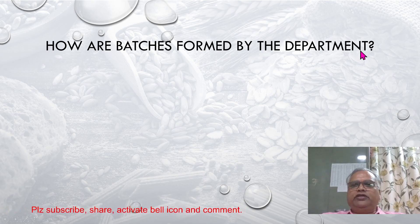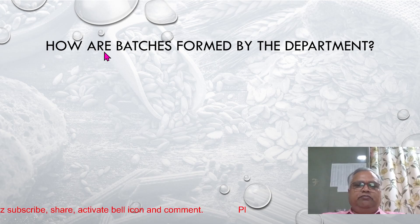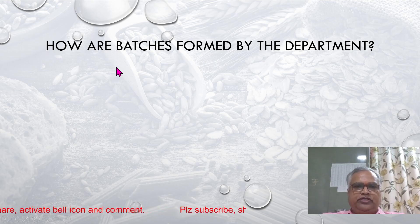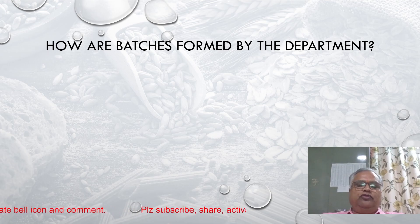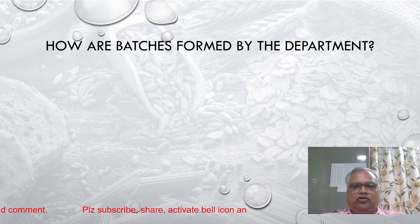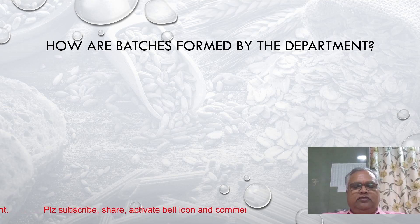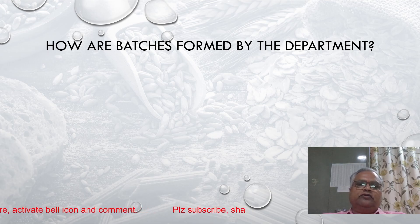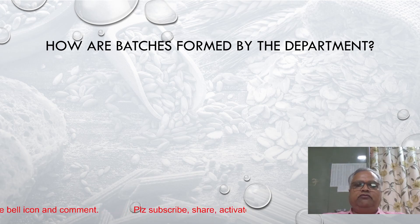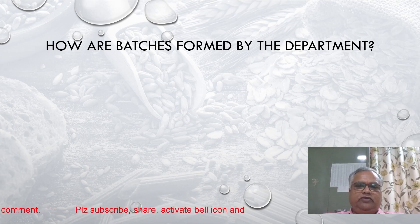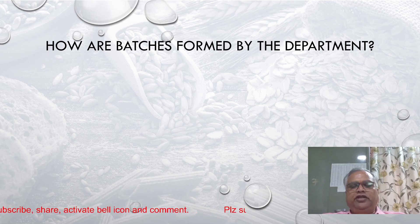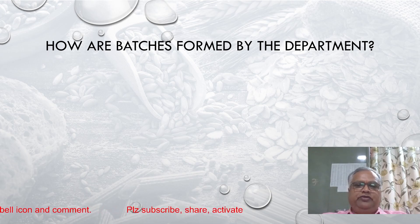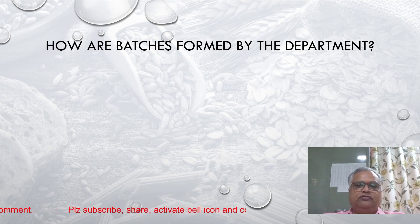How are batches formed by the department? A batch will contain a group of 3 to 4 students. Out of 4, there will be a class topper, an average student, and 2 below-average students — so the group contains all types. All toppers cannot be in one group and all weak candidates cannot be in one group. The first 2 students will be decided by the department; the remaining 2 will be decided by those 2 students. Some freedom is given to the department and some to students.